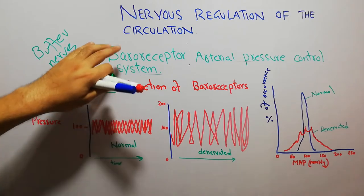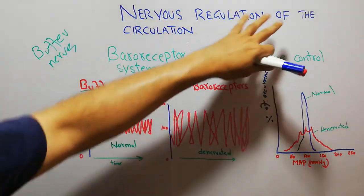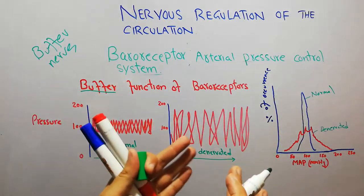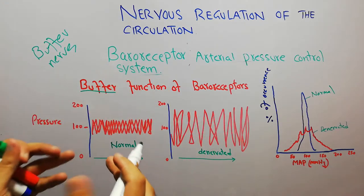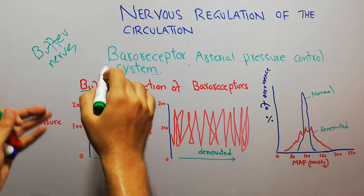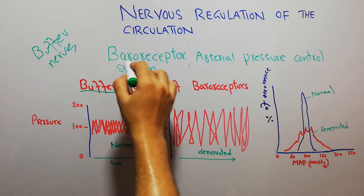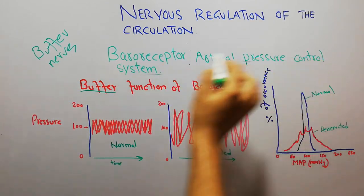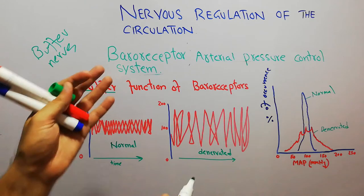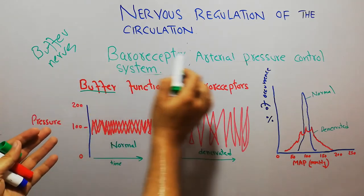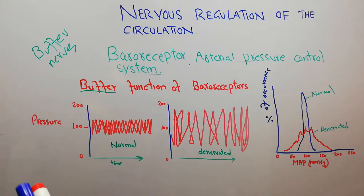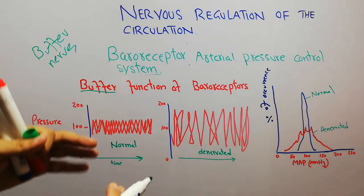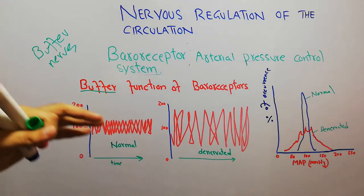We are basically discussing the nervous regulation of the circulation — how the nervous system is involved in regulation of the circulation. As a category, we are discussing the baroreceptor arterial pressure control system. We have discussed the physiologic anatomy of the baroreceptor arterial pressure control system and the mechanism with which the baroreceptor sends signals and how the brain then acts on those signals.